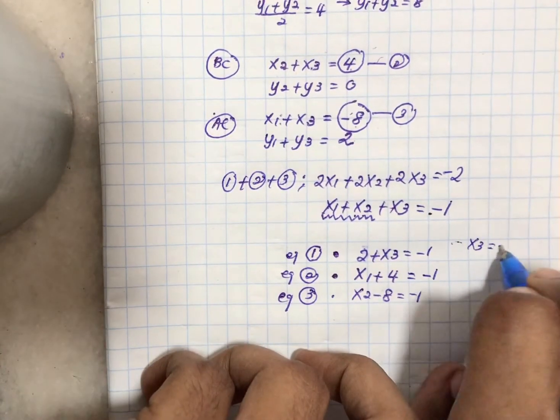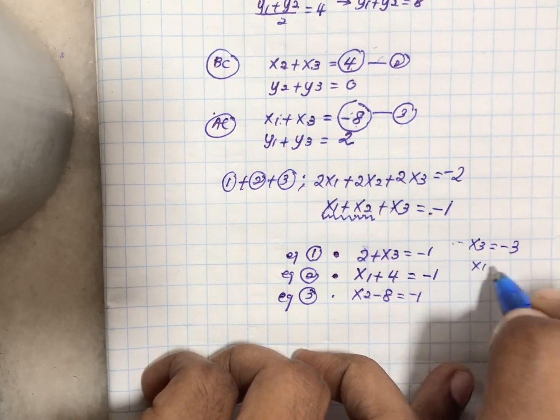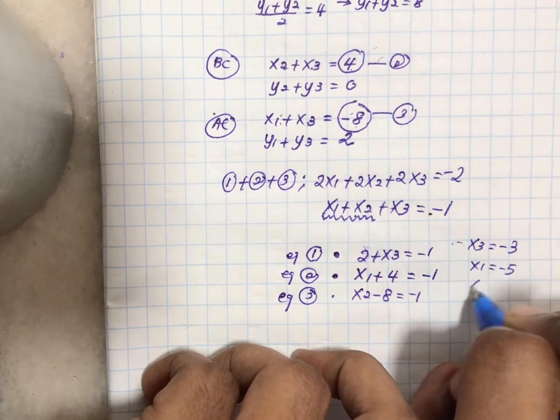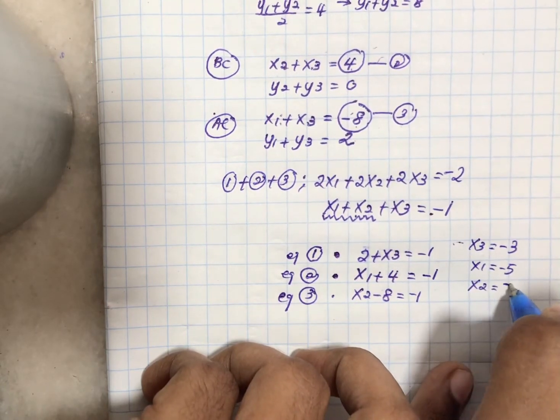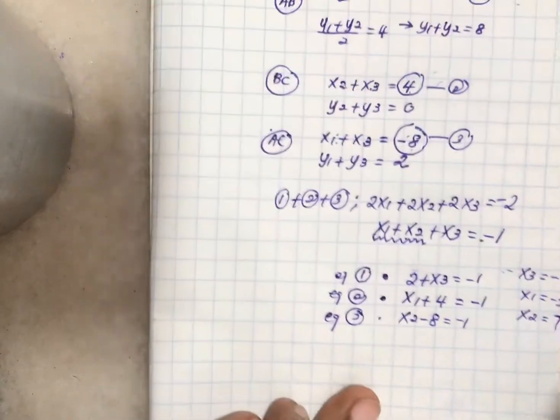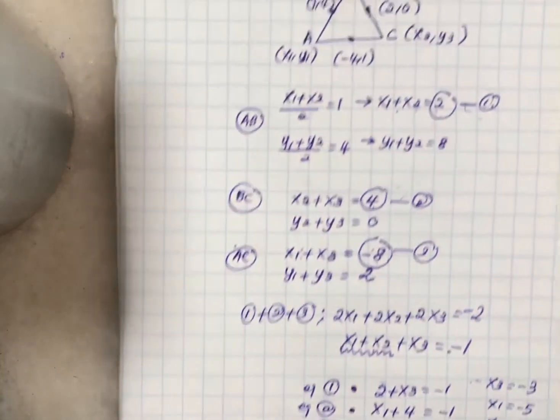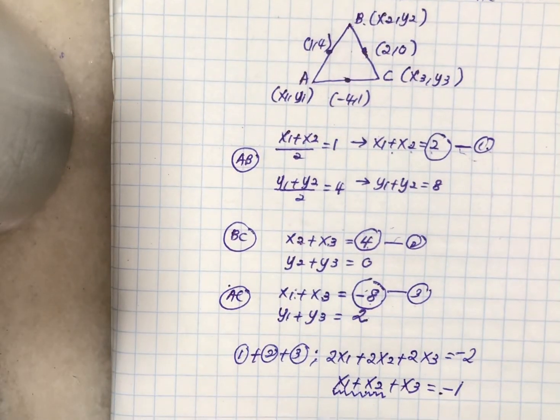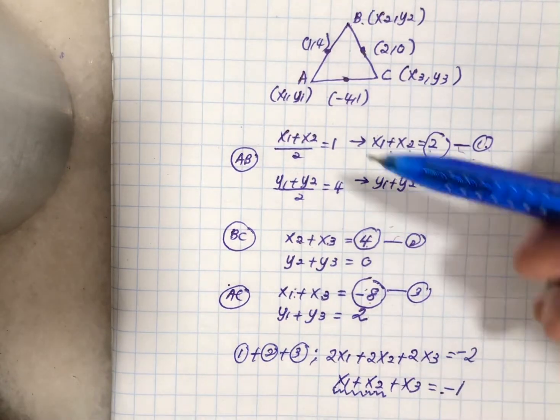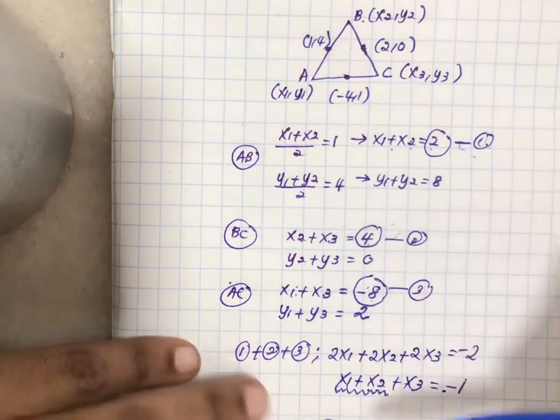You can find all the y-coordinates the same way. The shortcut is derived from this concept but it's much faster. Let me show you how to find B easily. What you do is take the x-coordinate.